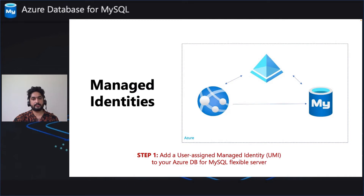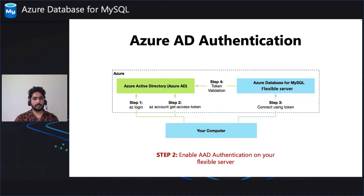For Azure AD to work, you first need to add a user managed identity to the flexible server. If you want to learn more about UMI, please check out my previous video on customer managed key. Once the UMI is assigned, the MSRP issues a certificate to the UMI. Using this certificate and client ID, your application can request a token from Azure AD. Azure AD returns the JSON web token, which your application sends to the flexible server for authentication. Post successful validation, the application is able to log into the server and can access the database.